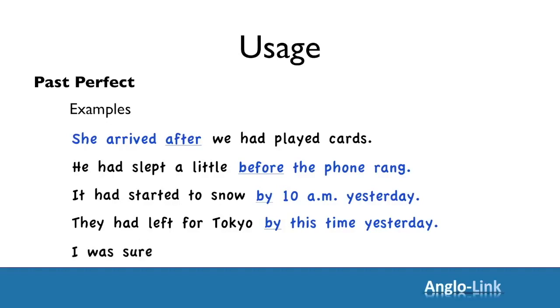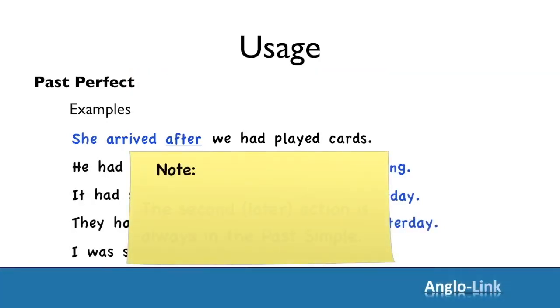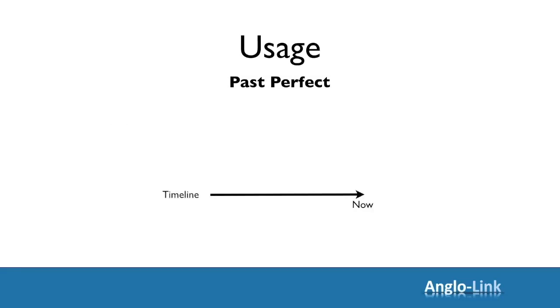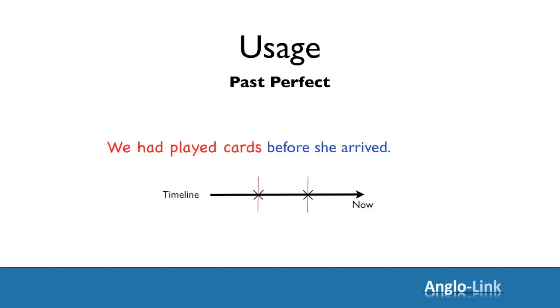They had left for Tokyo by this time yesterday. I was sure that I had seen him before. Note that the second or later action is always in the past simple tense. Timeline: we had played cards before she arrived — one action was completed before the second, later action.